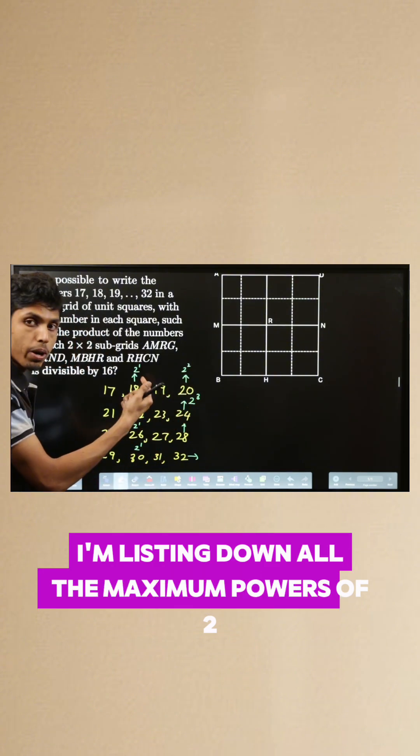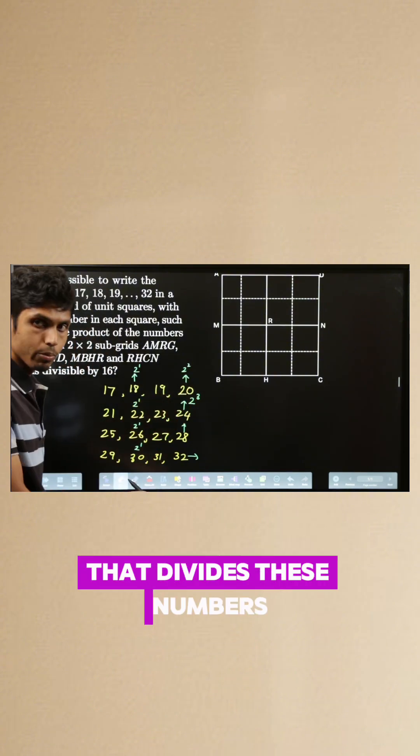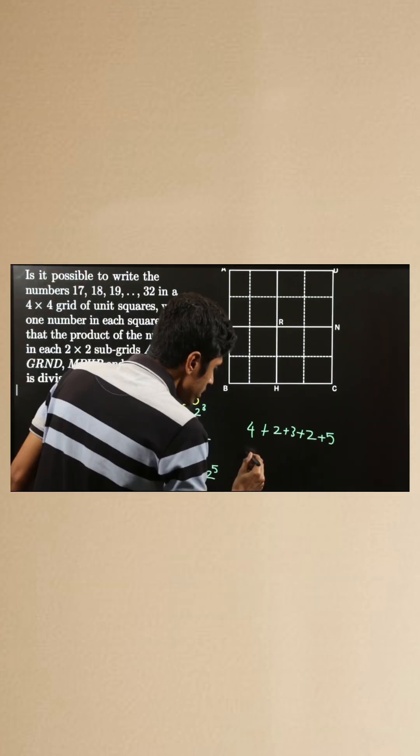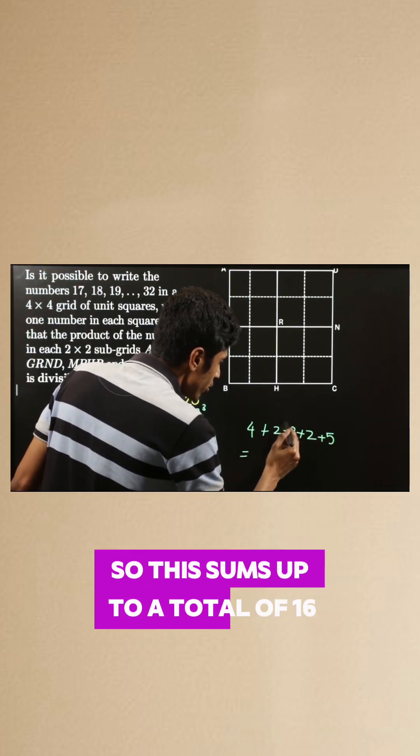I am listing down all the maximum powers of 2 that divide these numbers. Let's collect all the powers of 2 that are available here. So this sums up to a total of 16.